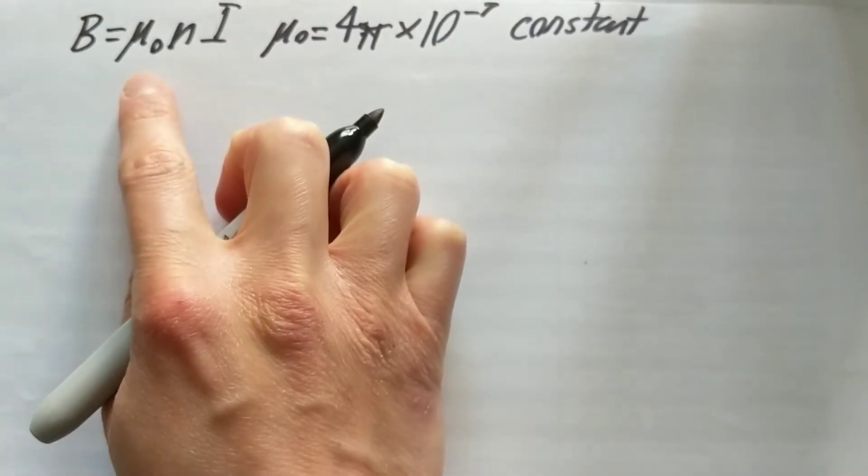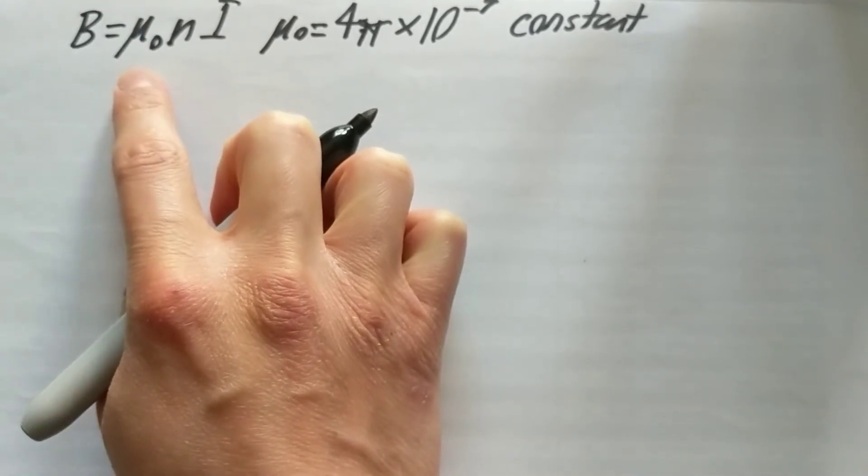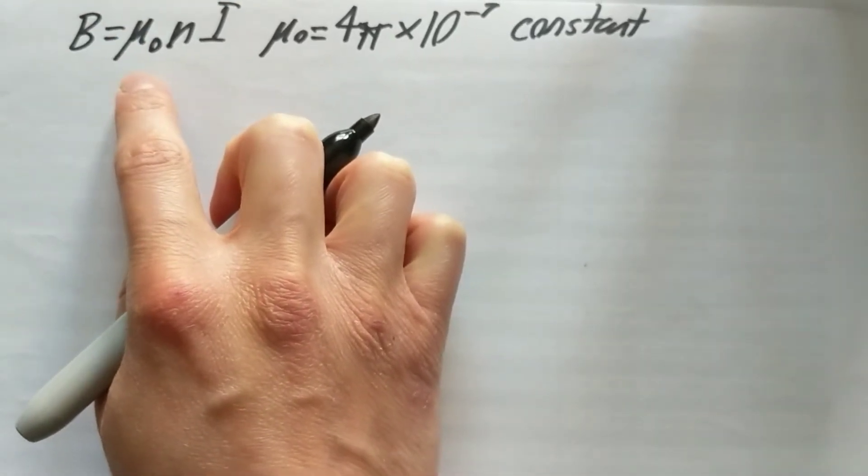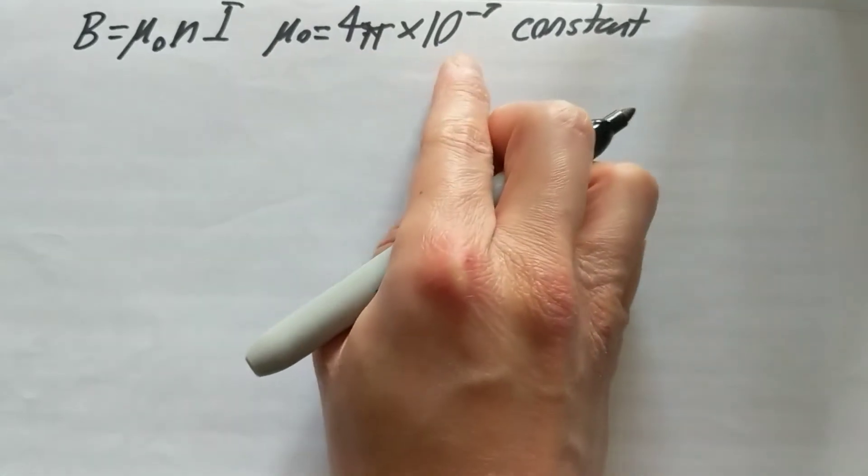So we did this already, we know that this is the permeability of free space, so this only applies to magnetic fields, and it's this constant, 4 pi times 10 to the negative 7th.